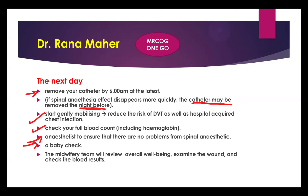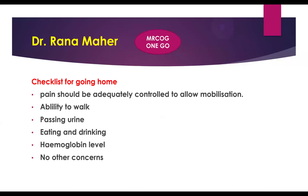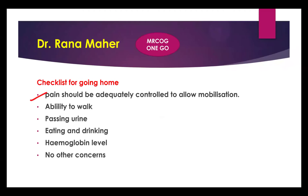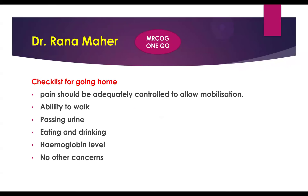Ask the mother to start gentle mobilization the next day to reduce the risk of DVT. Check the full blood count — especially haemoglobin — before discharge. The anaesthetist will review the patient once more to ensure no complications from the spinal. The neonatology team will check the baby. The midwife team reviews overall maternal wellbeing, wound, and blood results. If the patient fulfils all discharge criteria, she can be discharged.